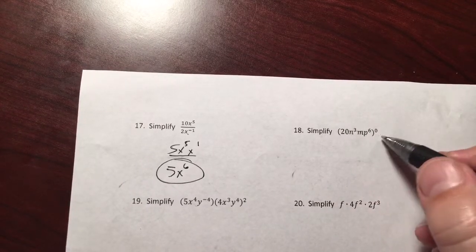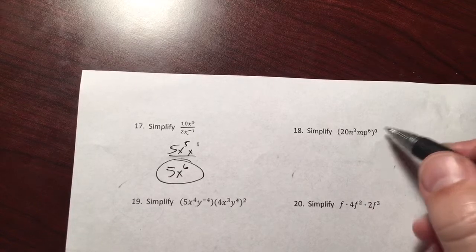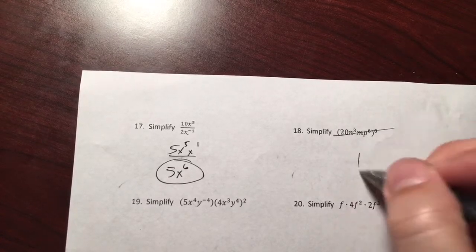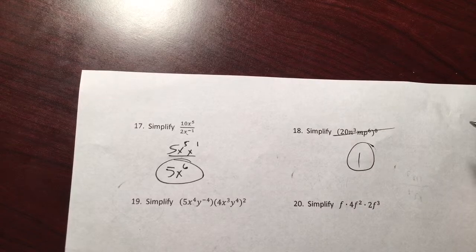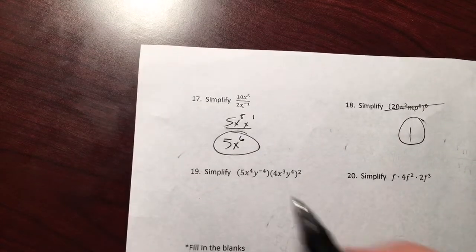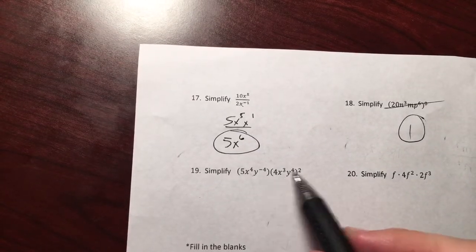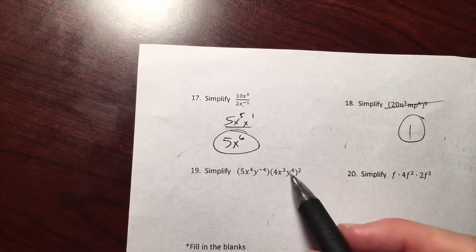That power happens to be zero. Anything to the zero power is 1, final answer, because it all got raised to the zero power. Here, power to a power, yes, but only in the second parentheses.